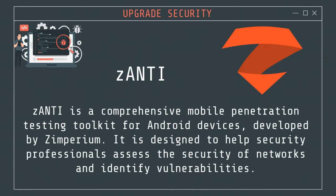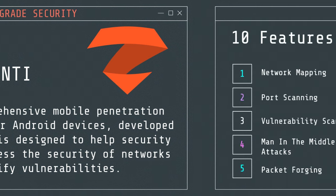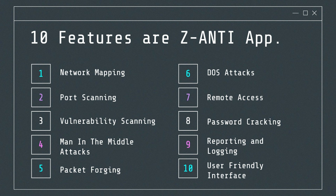Number 5: zANTI is a comprehensive mobile penetration testing toolkit for Android devices developed by Zimperium. It is designed to help security professionals assess the security of networks and identify vulnerabilities. zANTI offers a wide range of tools and features that facilitate network analysis and penetration testing. Network mapping — scans the local network to identify connected devices, displaying IP addresses, MAC addresses, device names, and vendor information. It also maps packet routes showing each hop along the way.